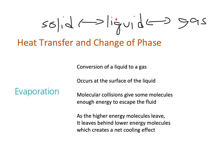If I have a liquid and I heat it up, keep heating it up and put more and more heat into it, the liquid is all going to evaporate and turn into a gas. That would be another phase change — a change of phase from liquid into gas. It can also go backwards: if I have a gas and I cool it down, it could condense into a liquid.